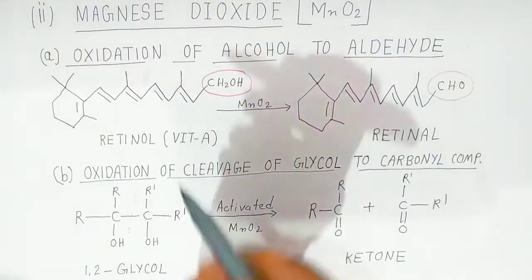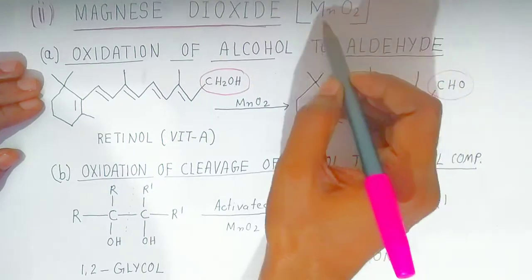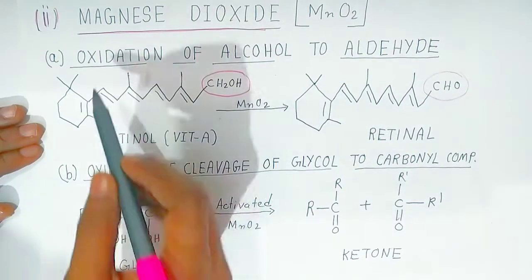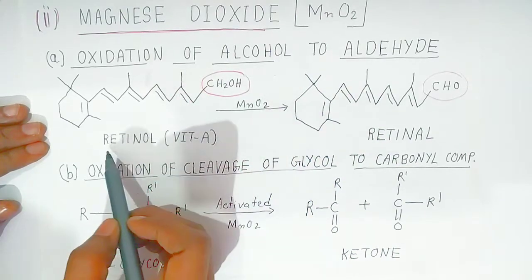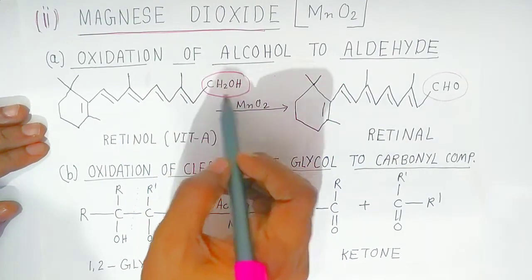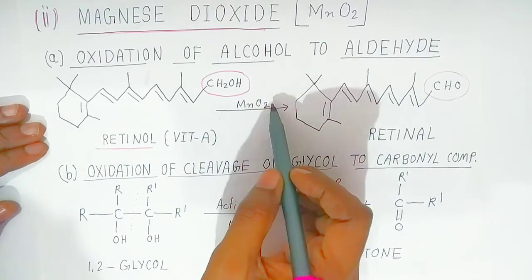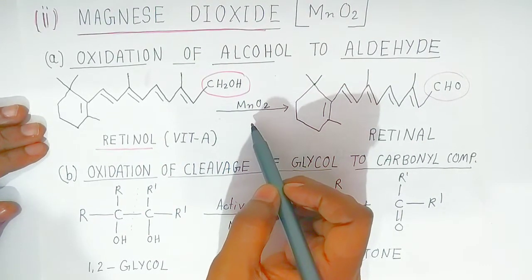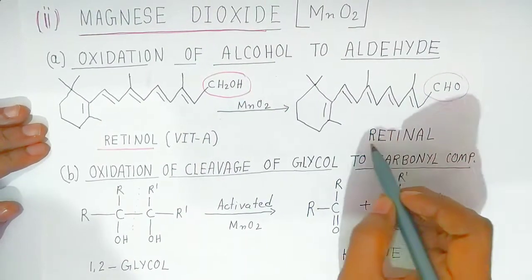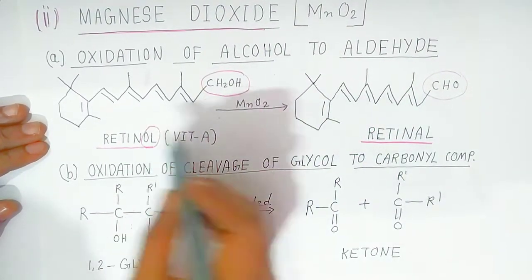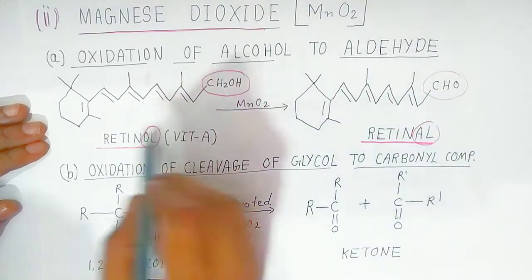The second type of manganese compound is manganese dioxide, formula MnO2. Oxidation of alcohols to aldehyde: here retinol (Vitamin A), which contains a CH2OH group, in presence of manganese dioxide as oxidizing agent, the alcohol is converted into an aldehyde group called retinal. So retinol is converted into retinal — it is oxidized.